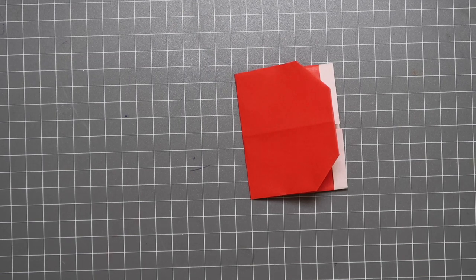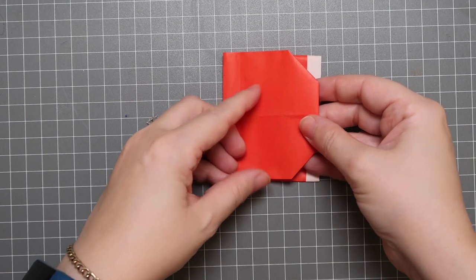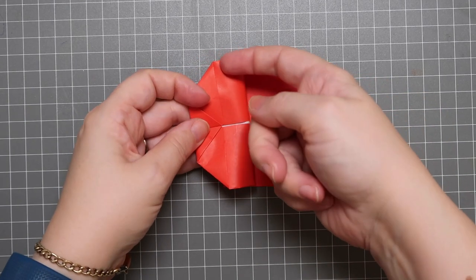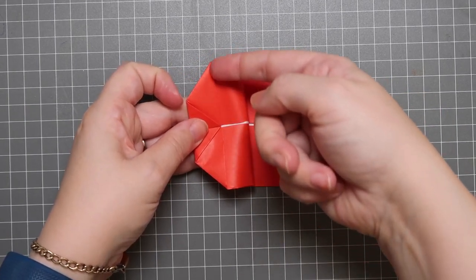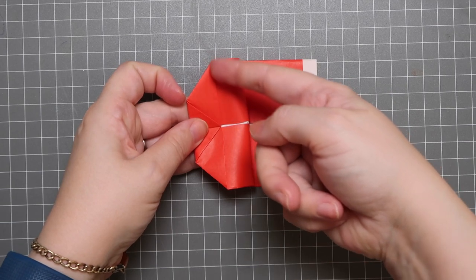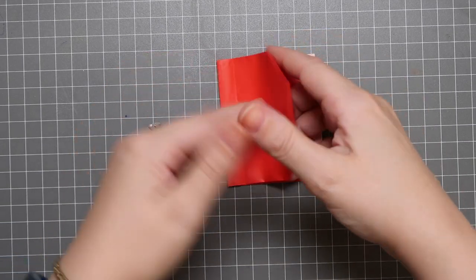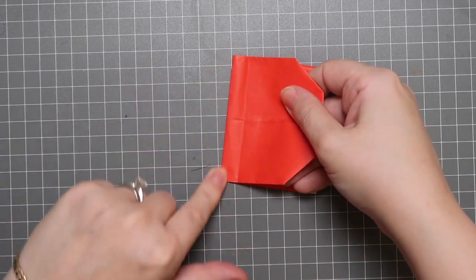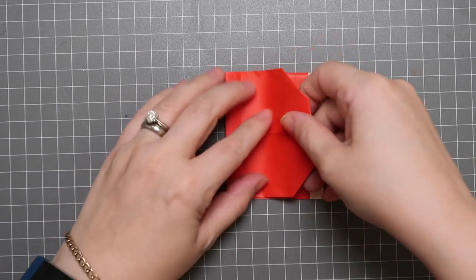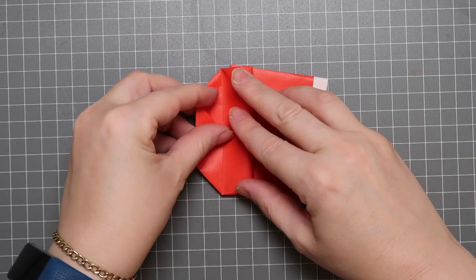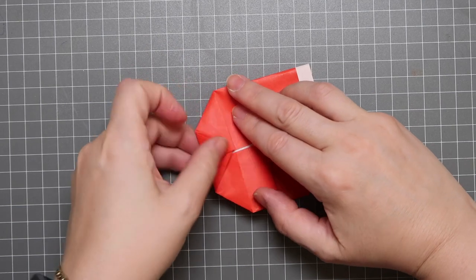Now the next part is actually going to establish the foot of the sock. So, we're going to fold it back on itself so that the bottom of this previous triangle, where these flaps are, is going to line up with this edge that we've just created. This will help us to create the foot of the stocking.